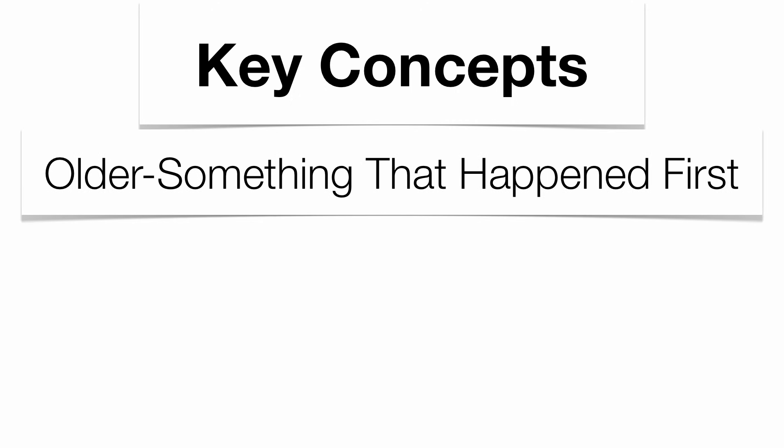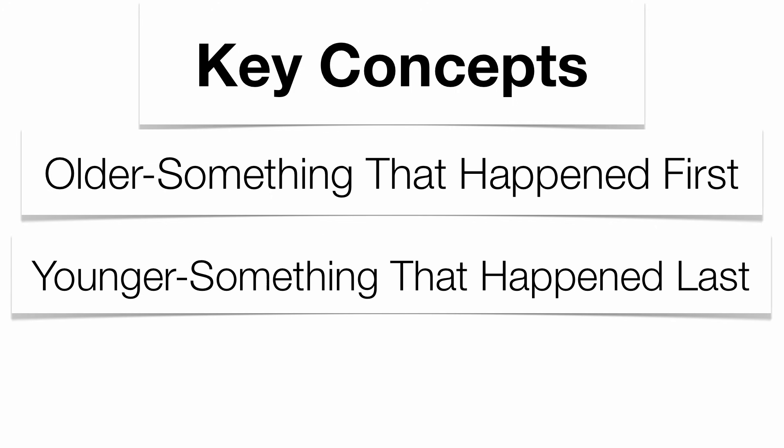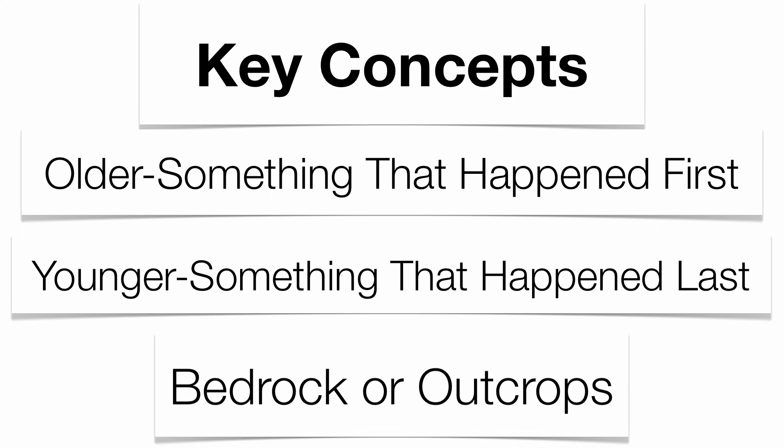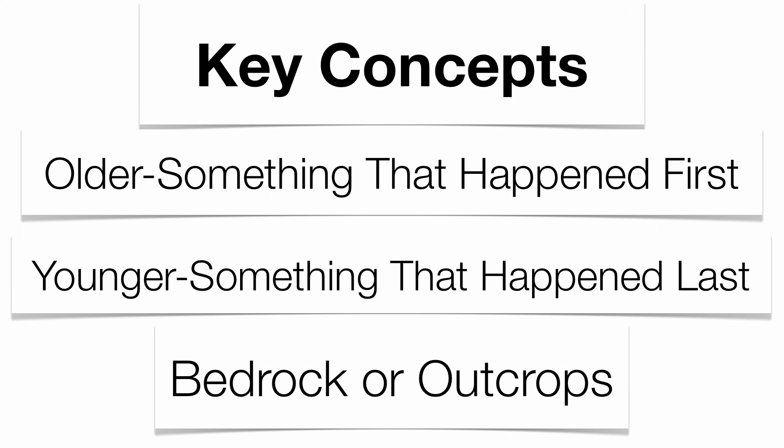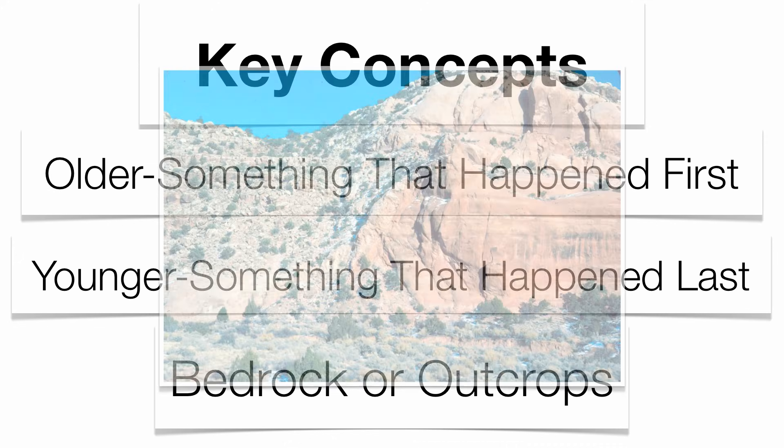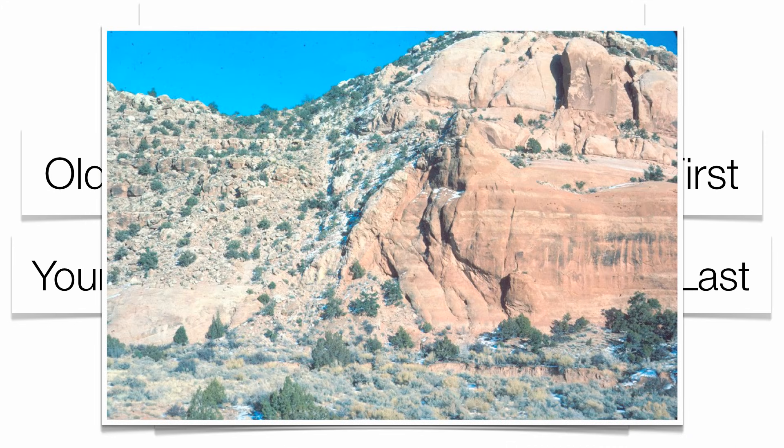There are a couple of key concepts for understanding the sequence of events. When something is described as older, that means it happened first. Something younger happened more recently or last. We're going to look at examples of outcrops of bedrock. Bedrock is the rock underneath the surface, and if it's exposed at the surface, it's called an outcrop.